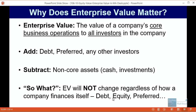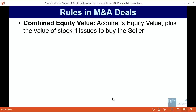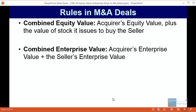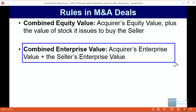Here are the rules you can use in M&A deals. The combined equity value is just the acquirer's equity value plus the value of stock it issues to buy the seller. In an M&A deal where over 50% of the other company is acquired, the seller's equity value and shareholders' equity go away completely. All that's left is the acquirer's equity value — plus any stock issued. The combined enterprise value is simply the acquirer's enterprise value plus the seller's enterprise value.